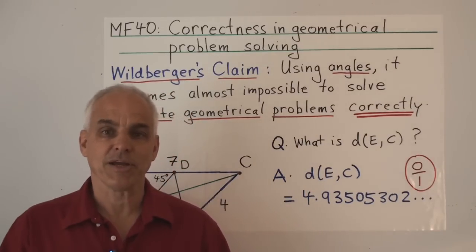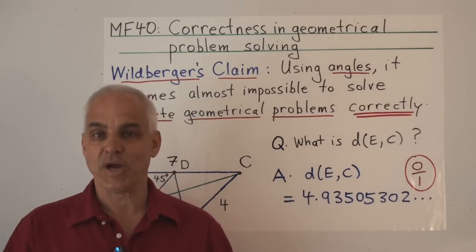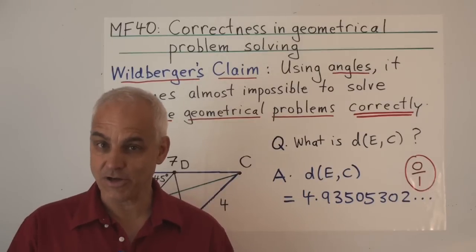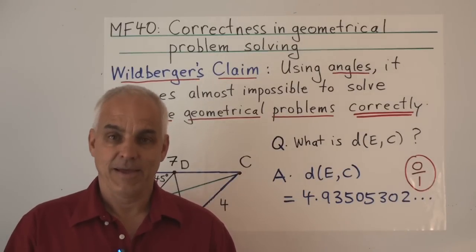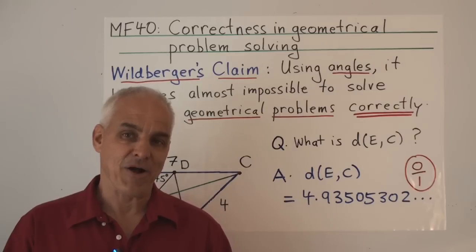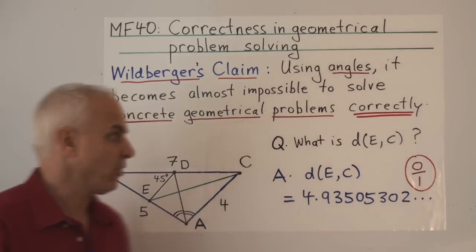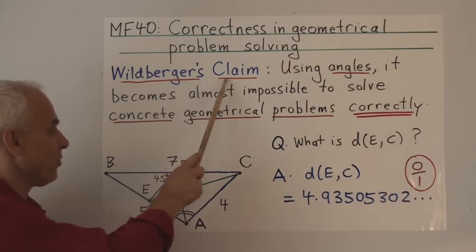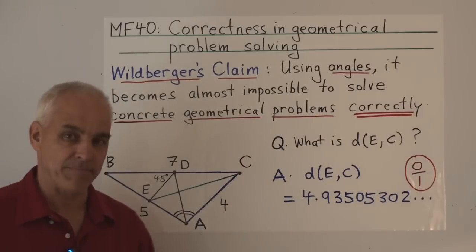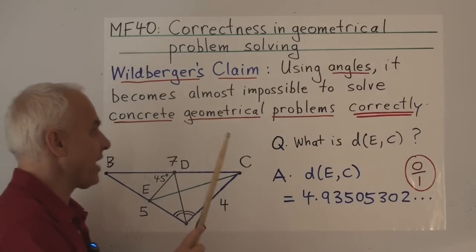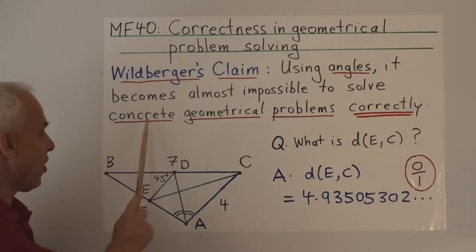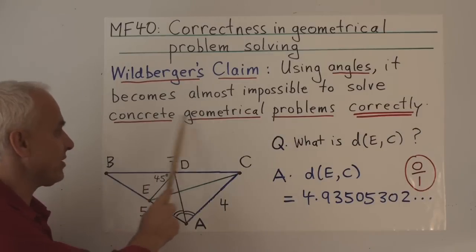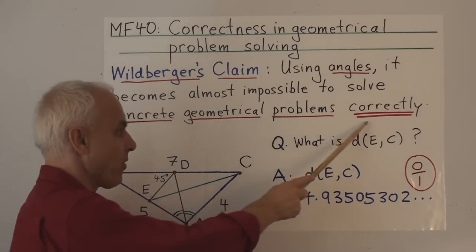However, in geometry, the situation with our current technology is completely different. And it's because we rely on angles. Last time I made the following strong claim — it's called Wildberger's claim — that using angles, it becomes almost impossible to solve concrete geometrical problems correctly.